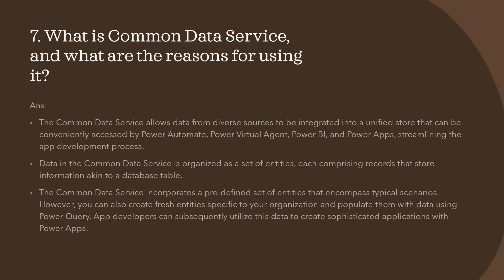The next question is: what is common data service and what are the reasons for using it? The common data service allows data from diverse sources to be integrated into a unified store that can be accessed by Power Automate, Power BI, and Power Apps. It streamlines app development by providing a single shared data service. Data is organized as a set of entities comprising records stored in database tables. You can create entities specific to your organization and populate them with data using Power Query, and app developers can then use this data to create sophisticated applications.